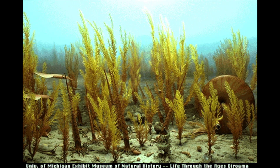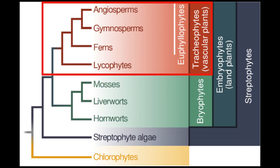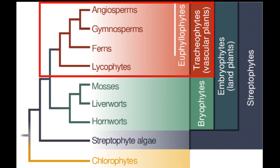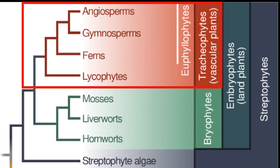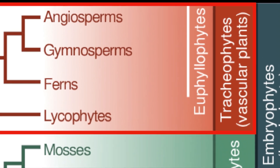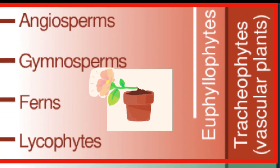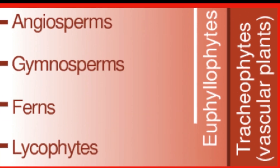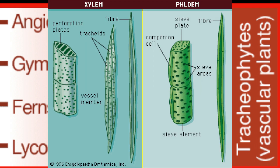The other main group are the tracheophytes, the vascular plants. Evolving after the bryophytes, this group of plants solved the gravity issue which plagued their predecessors. They invented lignified vascular tissue — boom, problem solved!